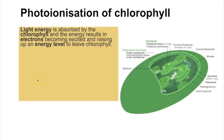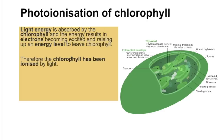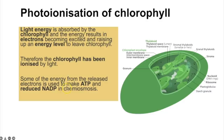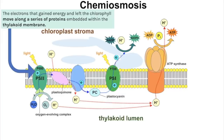Photoionization of chlorophyll: light energy is absorbed by the chlorophyll, and the ionization refers to the fact that the light energy causes the electrons to gain energy — they become excited, raising up an energy level — and that causes the electrons to leave the chlorophyll, so the chlorophyll has been ionized. Some of the energy from the released electrons is used to make ATP and reduced NADP in chemiosmosis.